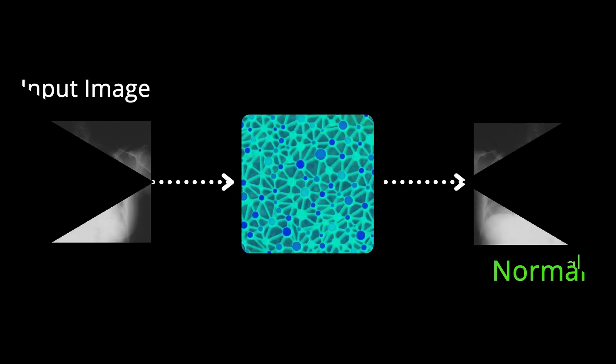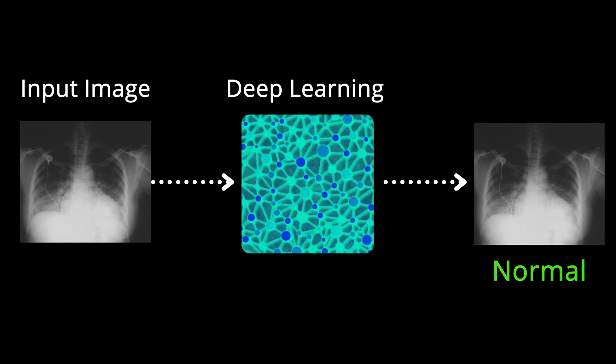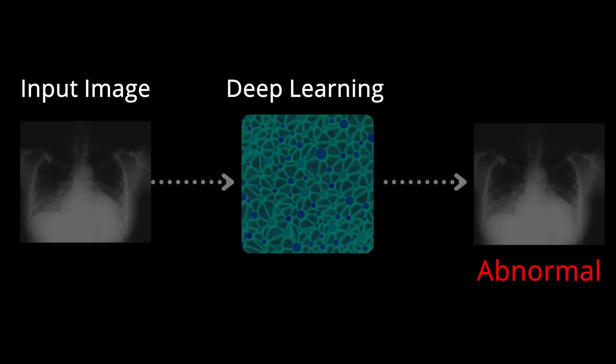QXR, developed by Qure.ai, uses a similar approach. QXR uses deep learning to classify its images into normal and abnormal chest X-rays with high accuracy and alerts any abnormality to the doctor.